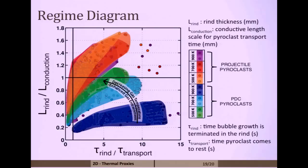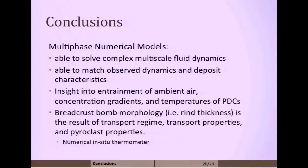In conclusion, I hope I've shown that multiphase numerical models are very important for our study of pyroclastic density currents and the dynamics of those currents and that we're able to solve complex multiscale fluid dynamics with these models. Through these models, we're able to match observed dynamics of these flows with deposit characteristics. This gives us insight into how particles segregate in these flows, what controls the runout distance of these currents, which is a large hazard. Our model of breadcrust morphology or basically that rind thickness is a result of the transport as well as the thermal history of these flows. We've created a numerical in-situ thermometer that will use coupled to the flows to match deposits to better understand how these currents propagate.